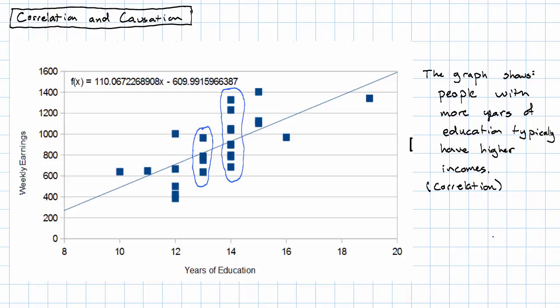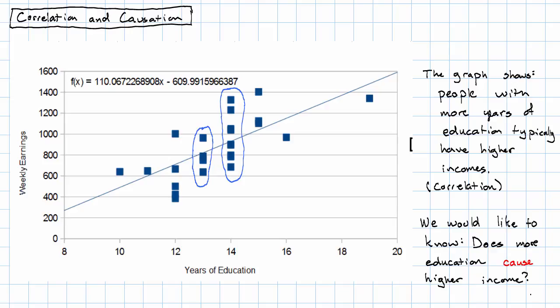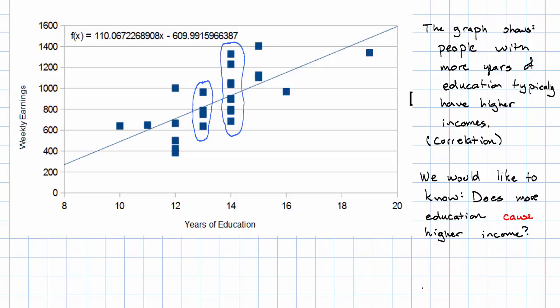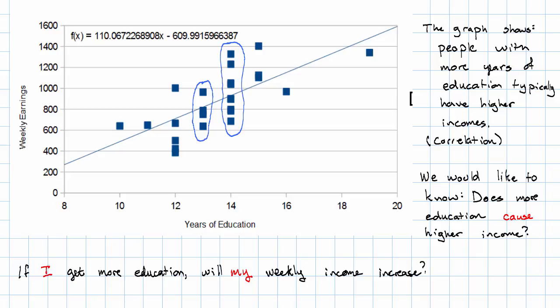The information that would be really useful to us would be information about causation. That is, does more education cause higher income? Ultimately, the question we want to answer when we see data that are related like this is: if I get more education, will my weekly income increase? And looking at a chart like this can't tell us the answer. In order to infer causation, we need more information than just the correlation between the data.